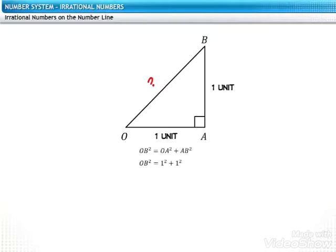On substituting the values of OA and AB, we get OB square is equal to 2. Therefore, OB is equal to the square root of 2.